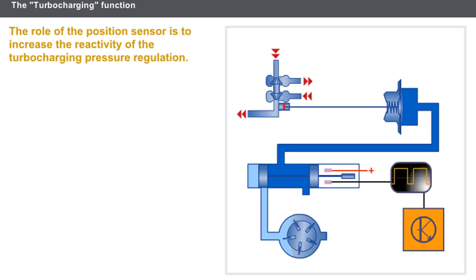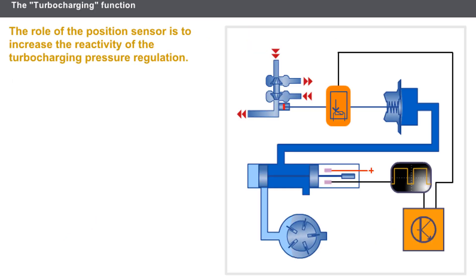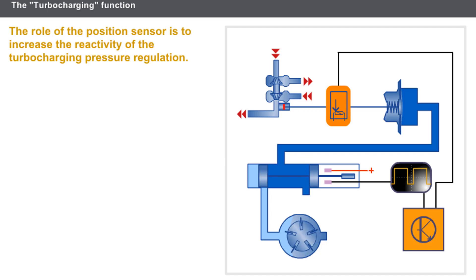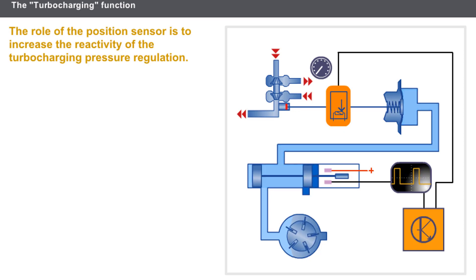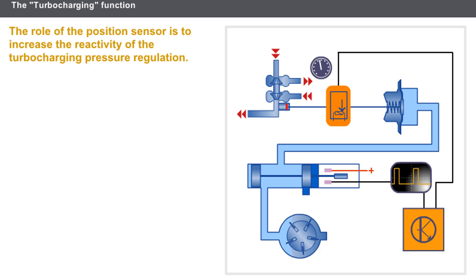On certain vehicles, the turbocharger pneumatic control is equipped with a position sensor. The role of the position sensor is to increase the reactivity of the turbocharging pressure regulation. When the accelerator pedal is applied quickly, the pressure increase is not immediate. By knowing the precise position of the regulation system, the computer is able to anticipate the control should the programmed value change very quickly.